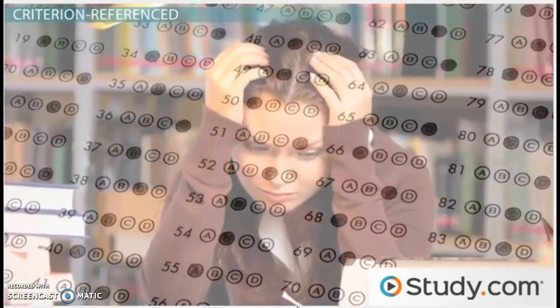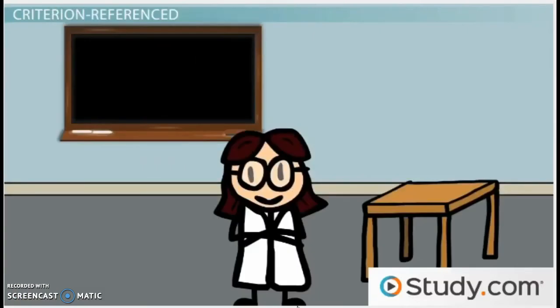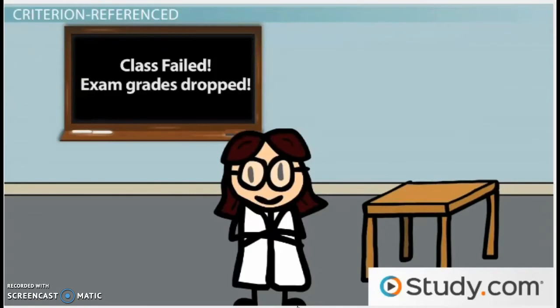But it is difficult to measure certain things, and criterion referenced tests run the risk of not giving a good picture of what people can and cannot do. Going back to Ricky, if her test is too difficult and the whole class fails, a criterion referenced score will not take into account that the test was difficult.